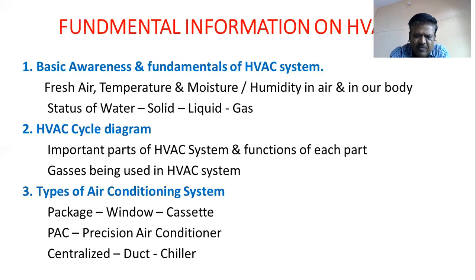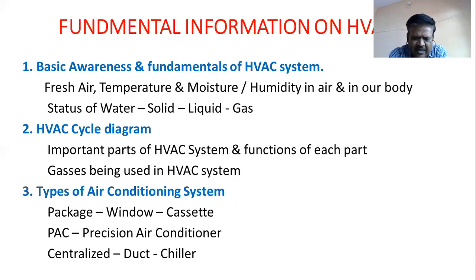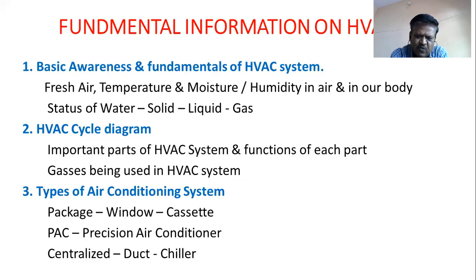Now, the types of air conditioning systems. You might have heard about package AC, window AC, cassette AC, precision AC, and centralized AC, duct AC, and chiller. Irrespective of the type, in all these different types, all these makes — these four components are a must: compressor, condenser, expansion valve, and evaporator must be there.